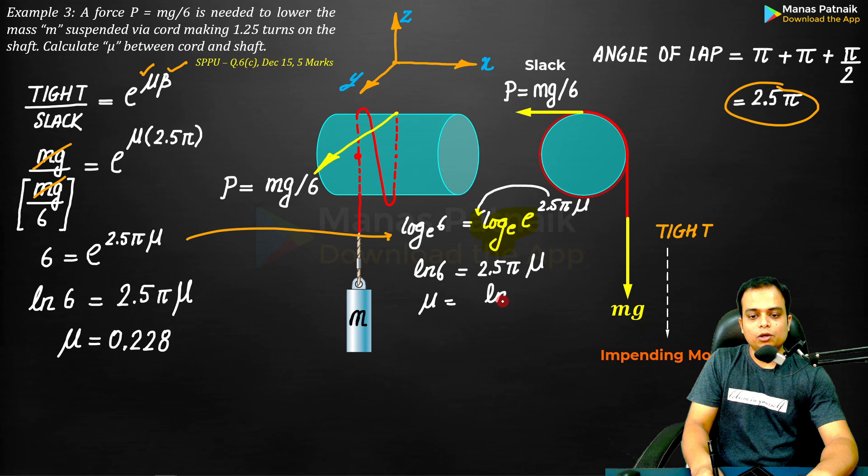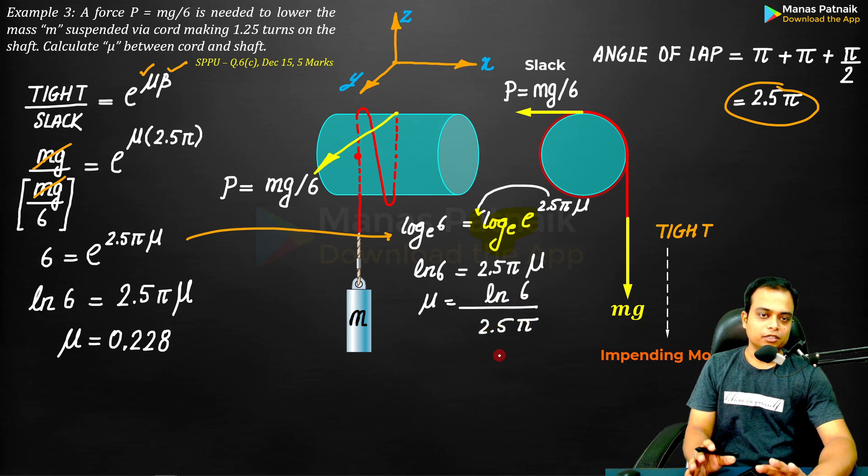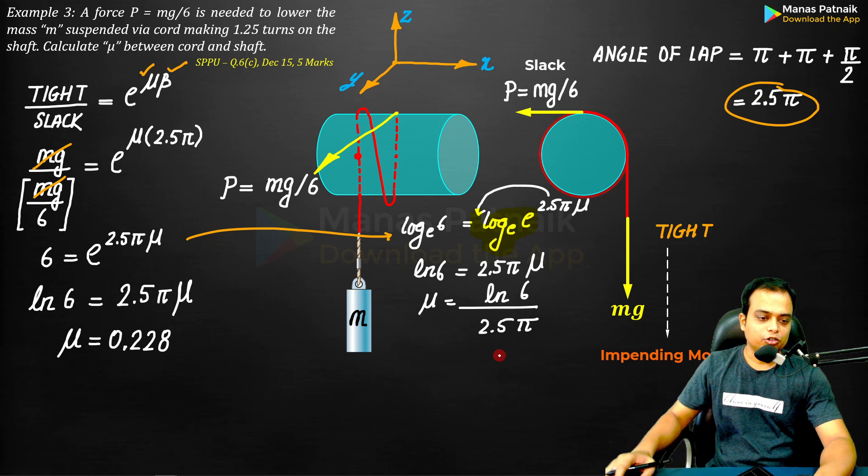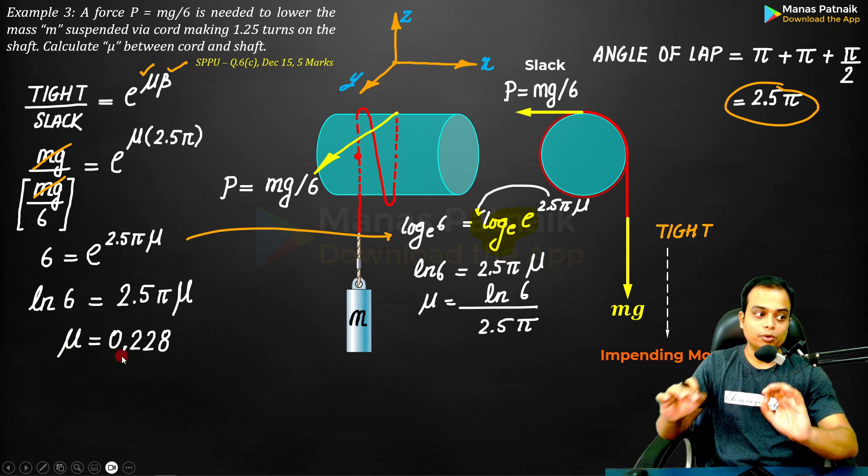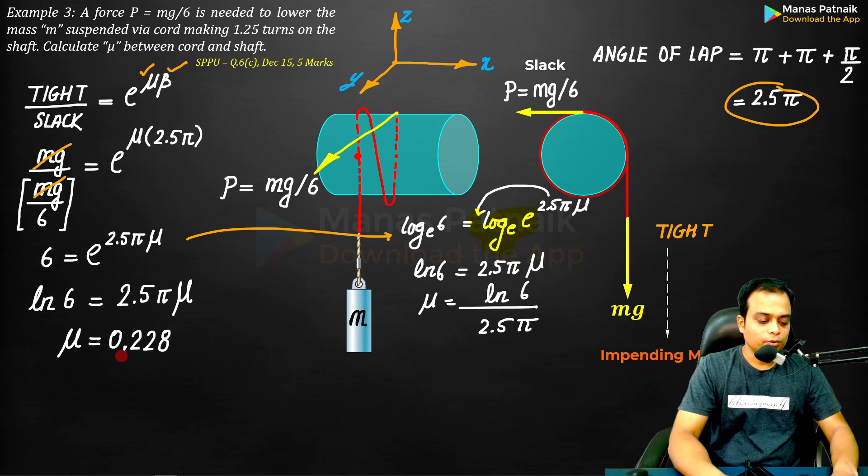And μ obviously is going to be equal to ln 6 over 2.5π. Just do the math, get the value - it should be equal to 0.228. Now you also know how to do this with the calculator.